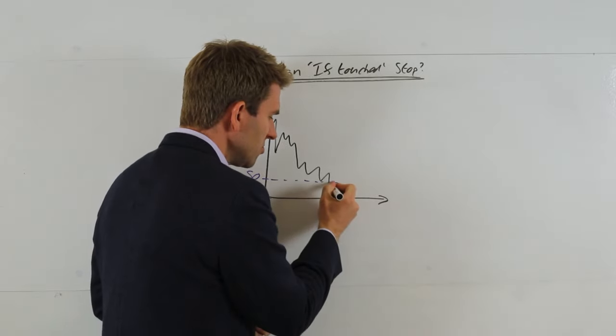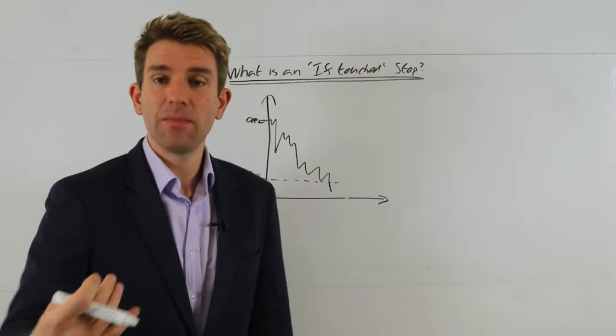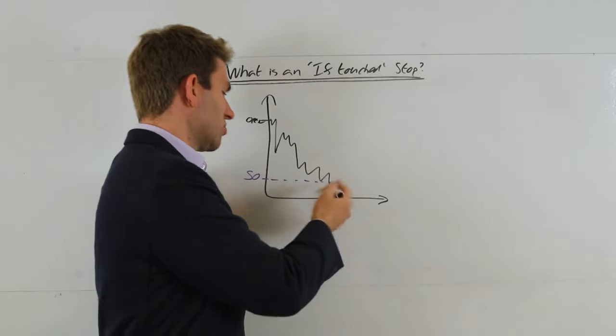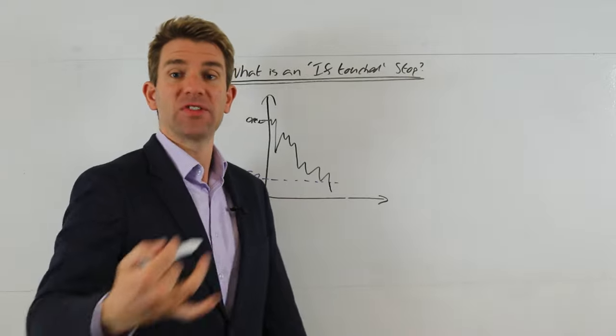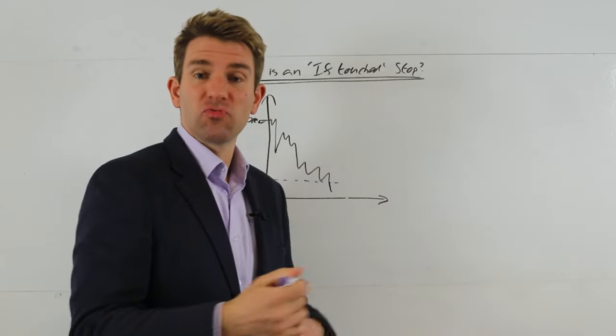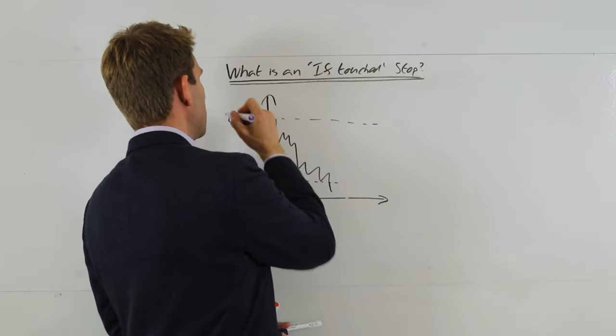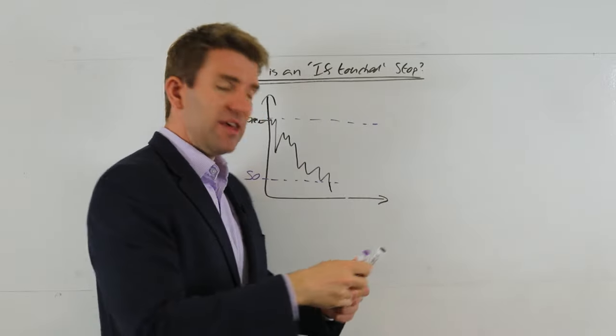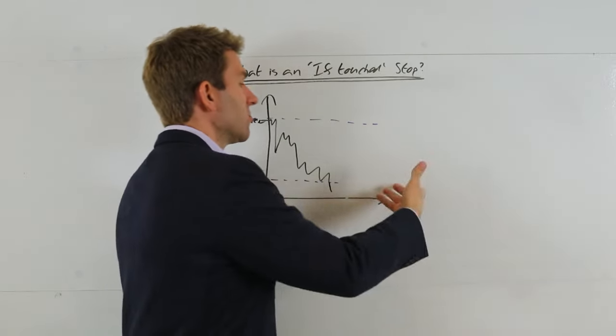The market goes through there. We might have our thesis, our trade idea thesis might be, if the market trades through that price support and pushes back up and recovers in the late afternoon, we want to buy as it breaks through the high. Okay, so there's our high level there. And let's say that's 60 just for argument's sake.